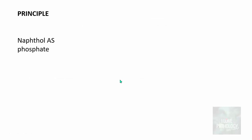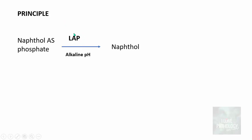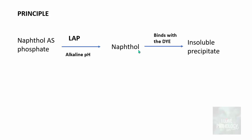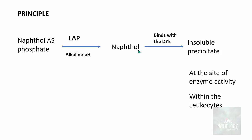The principle behind this stain is that the naphthol-AS-phosphate in alkaline medium is acted upon by alkaline phosphatase in the leukocytes — if it is present — the phosphate is cleaved and naphthol is released. This naphthol-AS-phosphate is hydrolyzed, releasing naphthol, which binds with the dye to form an insoluble blue color precipitate. This precipitate is found at the site of enzyme activity within the leukocytes.